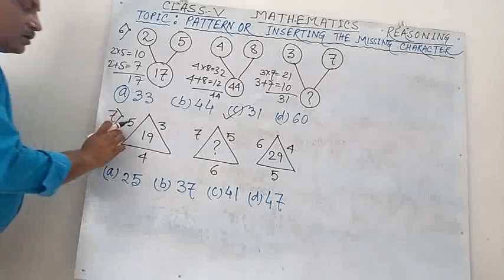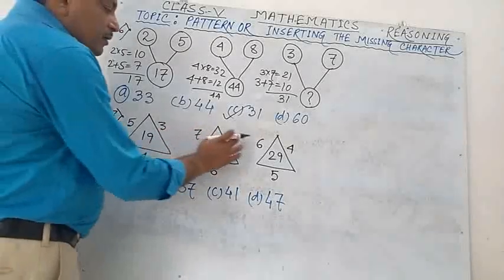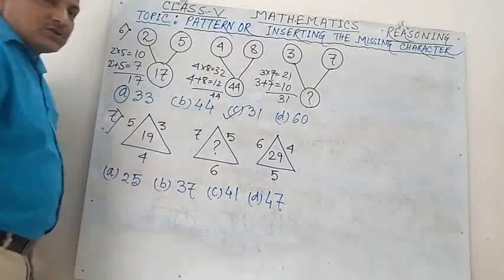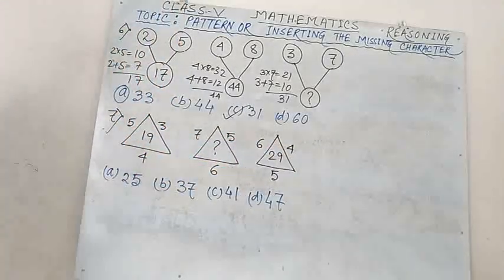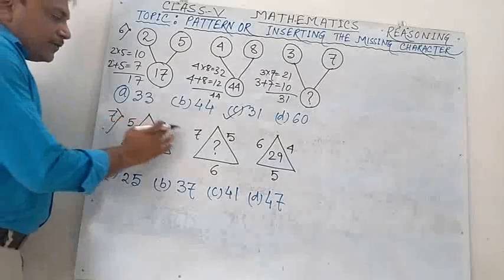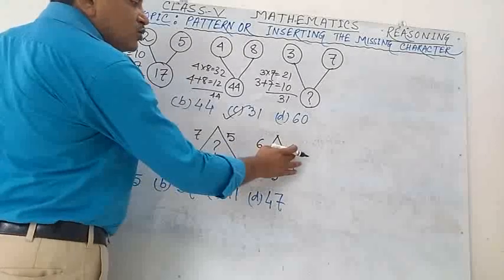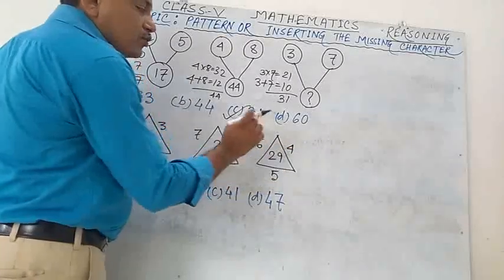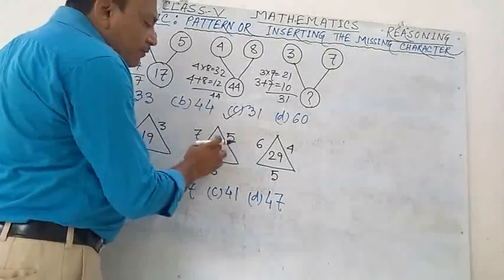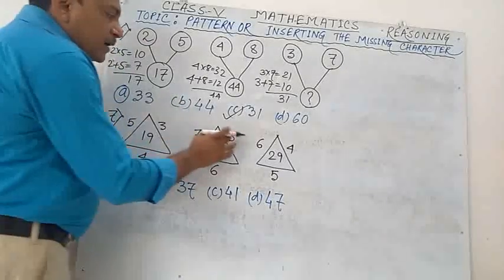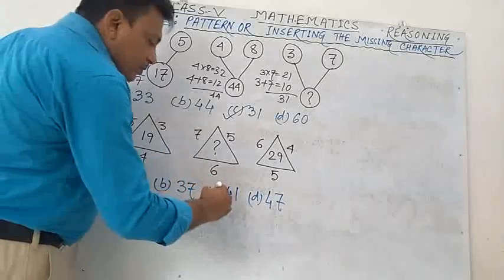Number 7. Given: 5, 3, 4 = 19; 6, 4, 5 = 29; then 7, 5, 6 — question mark. The relation: 5×3 = 15, plus 4 = 19. Then 6×4 = 24, plus 5 = 29. So: 5×7 = 35, plus 6 = 41.